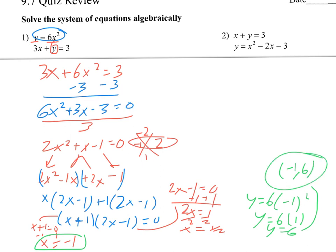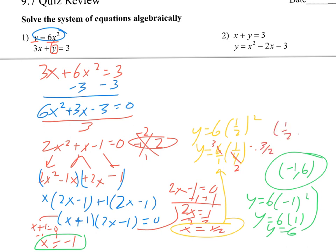Next up, I'm going to plug in my positive 1 half. So that would be y equals 6 times 1 half squared. I've got to do PEMDAS and square my fraction first — just square the top and square the bottom. Then I can cross-cancel there, and I get y equals 3 over 2. So my point here would be 1 half comma 3 over 2 for my x comma y value. So those are my two points.